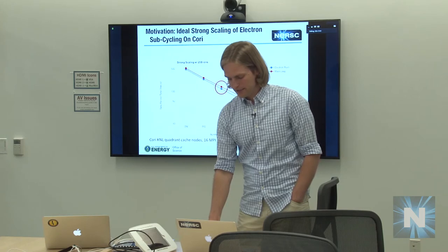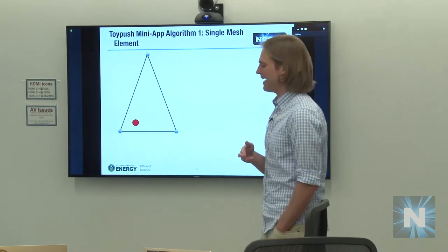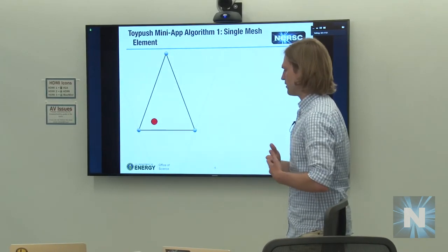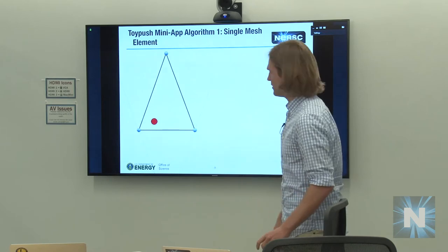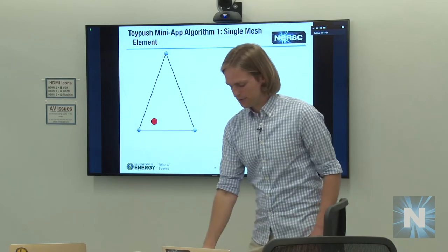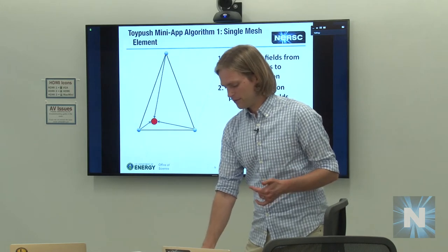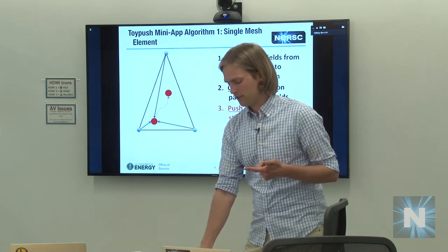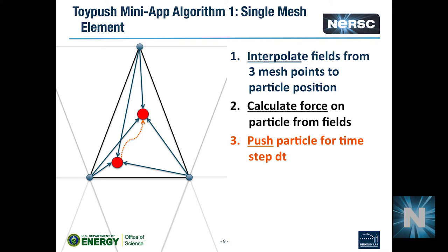That is why we started working on a mini-app for the electron push, which we gave the name 'toy push.' It's a simple algorithm: you initialize a group of particles and take a simple unstructured mesh — in the simplest case just one triangle. You put in a particle, collect the fields from the mesh to the particle, calculate the forces acting on the particle, move the particle to a new position according to the equation of motion, then interpolate again and cycle through, working on getting that running as fast as possible.